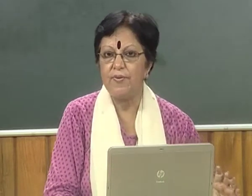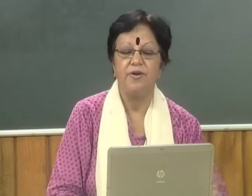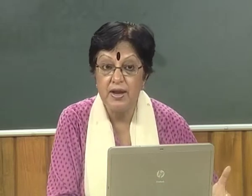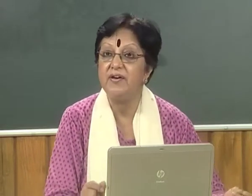Looking at poetic stylistics, apart from Hopkins and Wilfred Owen, there was a group who brought a revolution in poetic taste and practice — the rejection of the view of poetry represented by Palgrave's Golden Treasury, in favor of one who saw poetry as more symbolist, more cerebral, more intellectual. This revolution was an Anglo-American achievement. T.S. Eliot and Ezra Pound were in large measure its leaders, influenced by the French symbolists, and theoretical ammunition was supplied by T.E. Hulme. Many were influenced by his insistence on hardness and clarity, and his war on self-expression as a literary ideal.